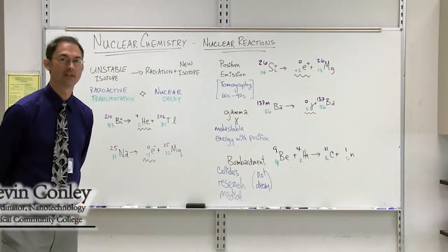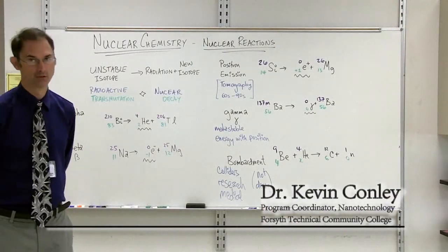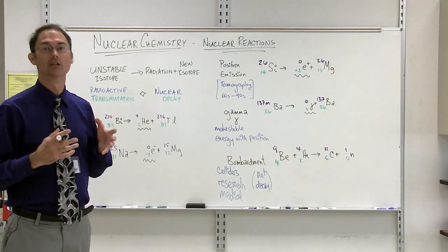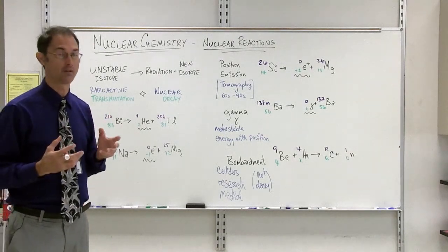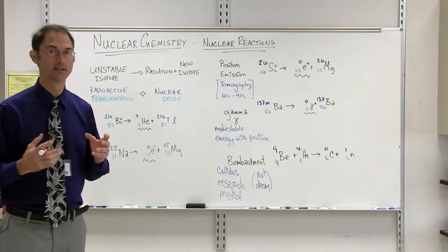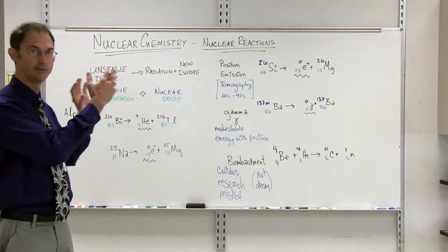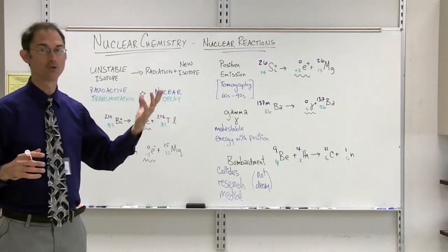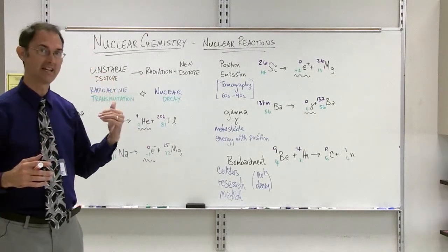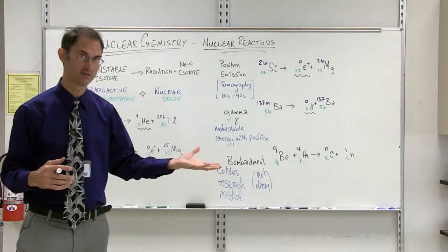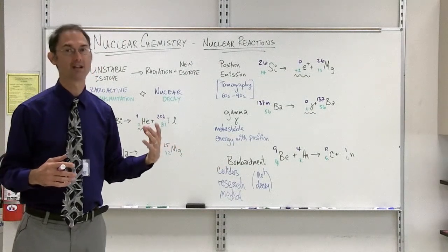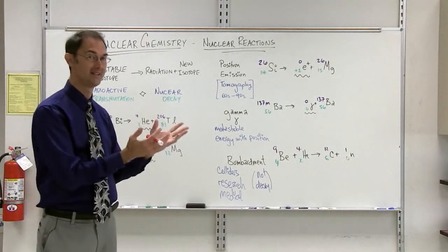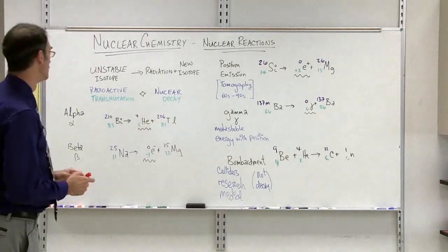Our video lesson now is nuclear chemistry. In particular, we will deal with nuclear reactions. We have essentially gotten to the real chemical aspect of nuclear chemistry because we will be dealing with reactions. We will have reactants and we will have products. In virtually all cases, we will have only one reactant because it will decay into multiple products. We will characterize these reactions according to what type of radiation will occur or be emitted from the reactants.